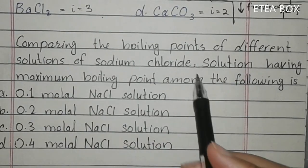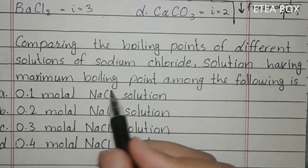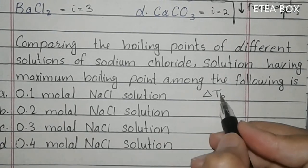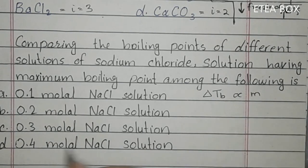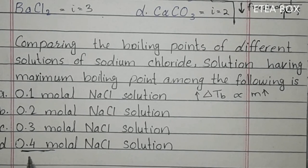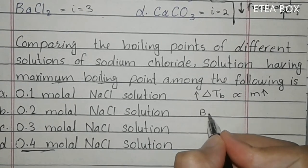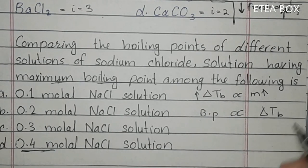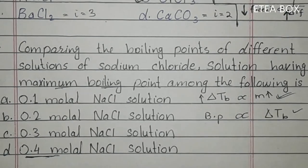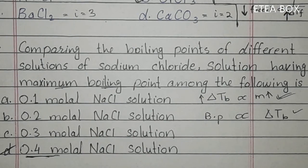MCQ 18: comparing boiling points of different solutions of sodium chloride — the solution having maximum boiling point. Here molality is given, so we don't write the van't Hoff factor. Elevation in boiling point is directly proportional to molality. Greater molality means greater elevation in boiling point. Boiling point is directly proportional to elevation in boiling point. So the solution with greater molality has the maximum boiling point. Option D is correct.